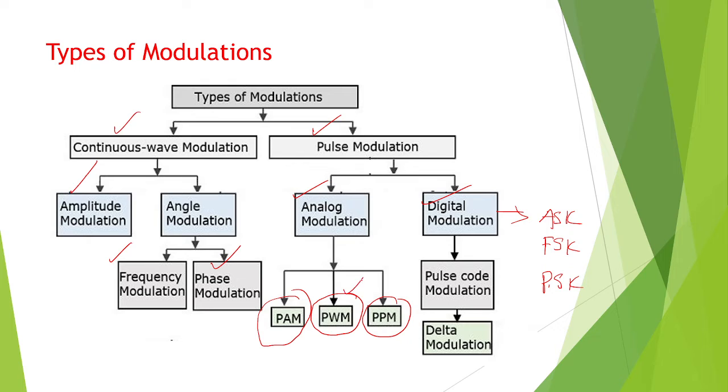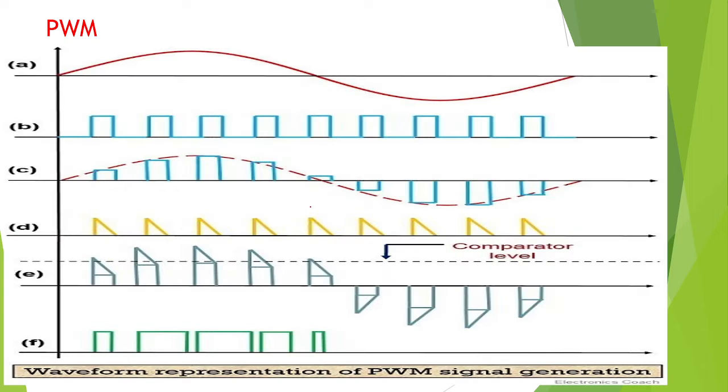Now I will show you Pulse Width Modulation. Modulation means carrier amplitude is varied according to the message signal, so carrier based on message signal.